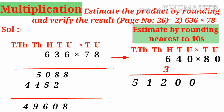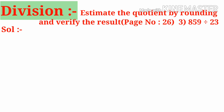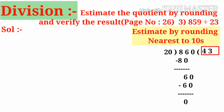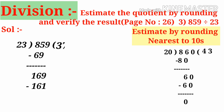Next, division: estimate the quotient by rounding and verify the result. Page number 26 in the textbook, third problem: 859 divided by 23. Before doing the actual division, let us estimate by rounding to the nearest ten — 859 becomes 860 and 23 becomes 20. 860 ÷ 20 gives an estimated quotient of 43. Now doing the actual division: 859 ÷ 23 — 23 × 3 is 69, subtracting gives 16; bringing down 9 gives 169, and 23 × 7 is 161, remainder 8. The actual quotient is 37, and the estimated value of 43 is close — a difference of only 6.